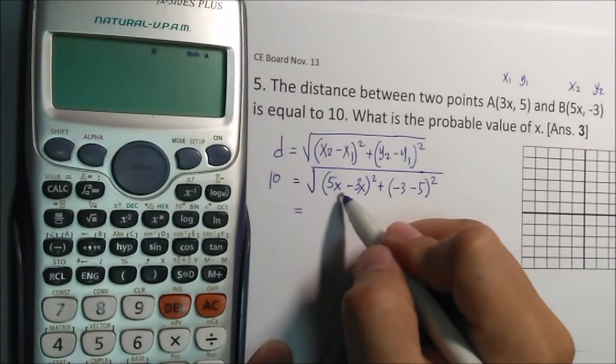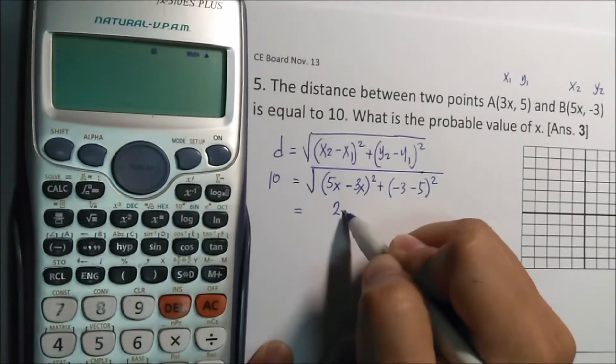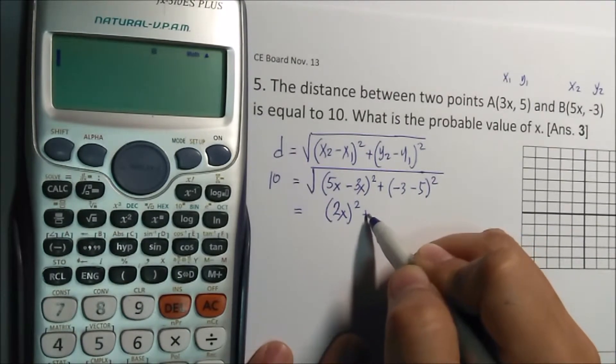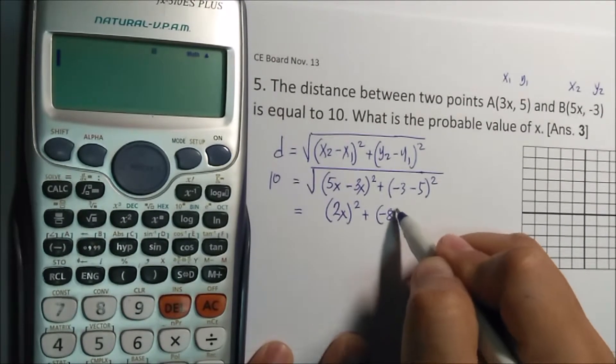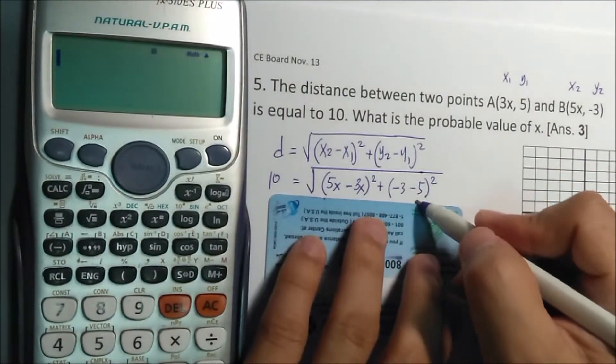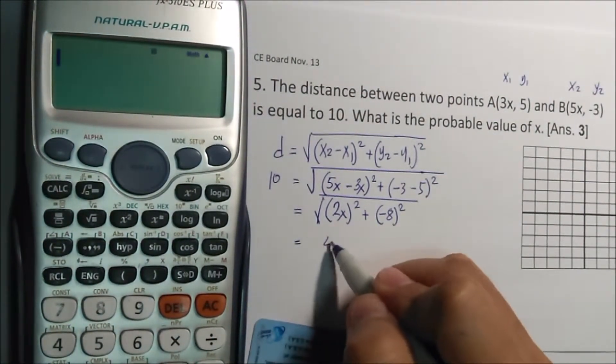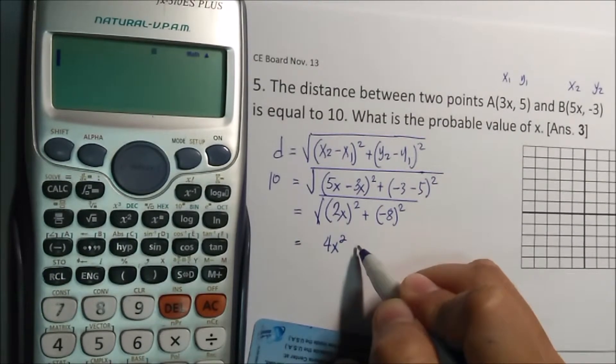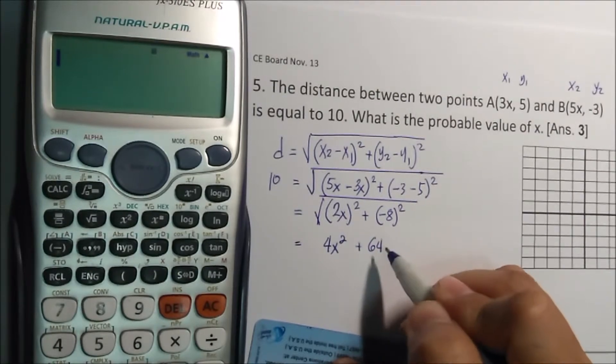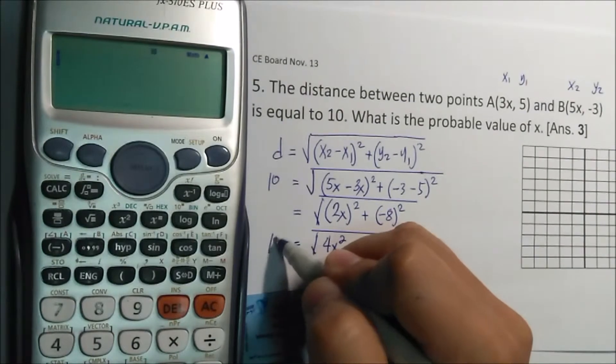5x minus 3x, that is 2x squared plus minus 3 minus 5 minus 8, minus 8 squared. Square root. Now this is 4x squared plus y2 minus 8 times 8, 64. And that is the square root, and still this is 10.